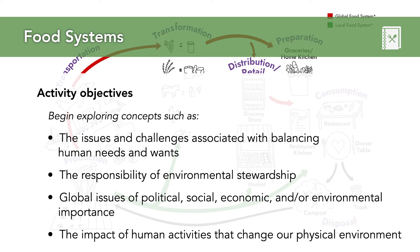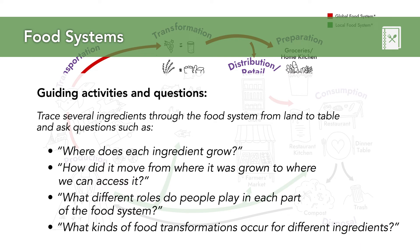There are so many ways to explore food systems in the classroom without using food. We're going to give some guiding questions just to get you started. For example, you could trace several ingredients through the food system, exploring their entire journey from farm to plate. You could ask: Where is each ingredient grown? — using examples both grown locally and produced in other parts of the world. How does it get from where it's grown to where we access it? What are the different roles that people play in each part of the food system? Has the ingredient been processed or transformed, and what types of food transformation occur for different ingredients?